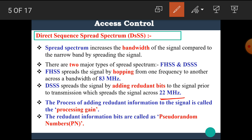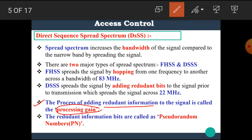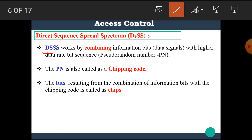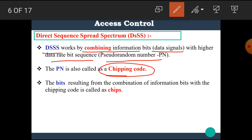The process of adding redundant information to the signal is called the processing gain. The redundant information bits are called pseudo-random numbers or PN. Direct sequence spread spectrum works by combining the information bits or data signals with a higher data rate bit sequence — the pseudo-random number PN. The PN is also called the chipping code. The bits resulting from the combination of information bits with the chipping code are called chips.